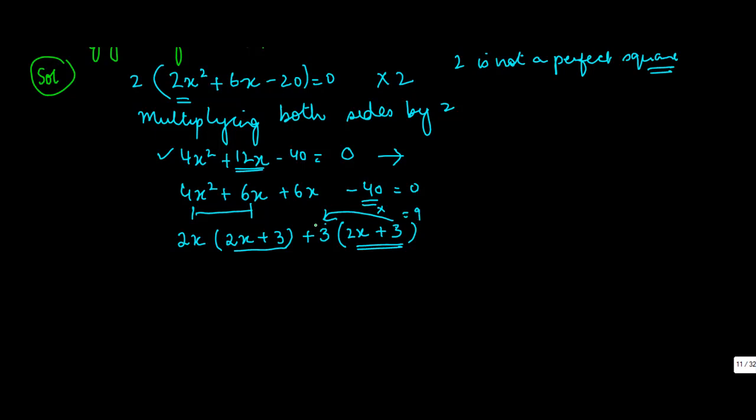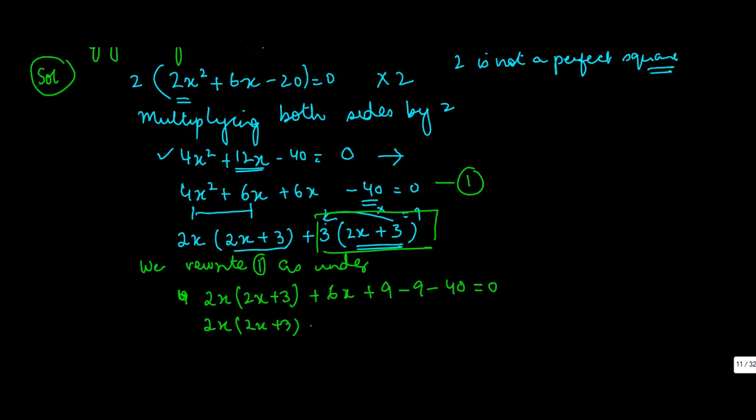3 × 3 = 9. So keeping this working aside, let's call it equation 1. We rewrite 1 as: 2x(2x + 3) + 6x + 9 - 9 - 40 = 0. This becomes 2x(2x + 3) + 3(2x + 3) - 49 = 0.